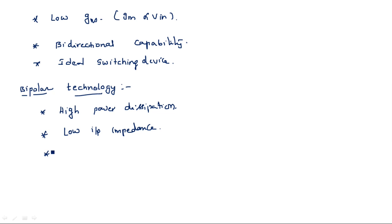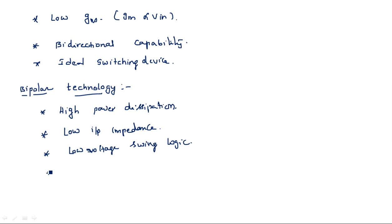Bipolar technology also has low voltage swing — when taking logic levels from 0 to +5 volts, we cannot get 100% accurate results in the output swing. The output may only reach up to 4 V at the top and 1 V at the bottom. Additionally, bipolar has low delay sensitivity to load.